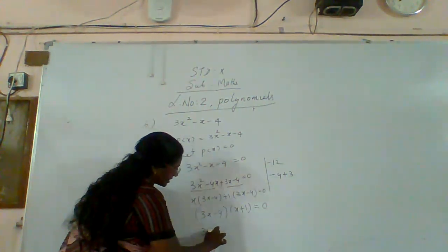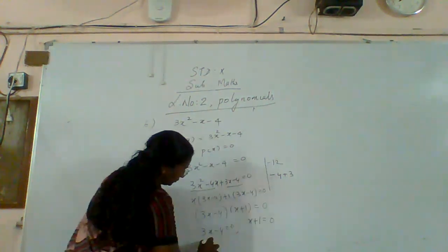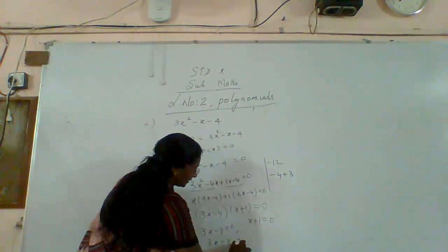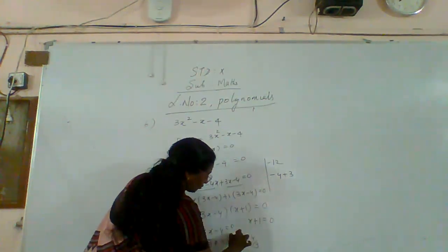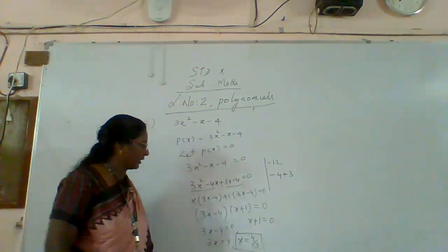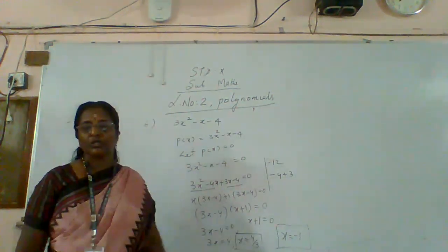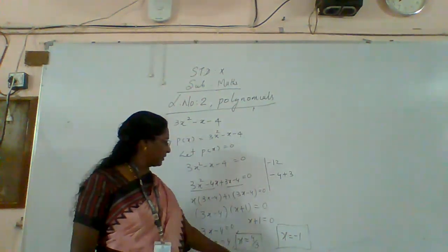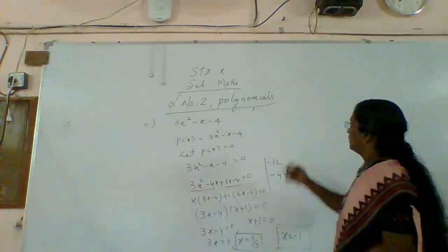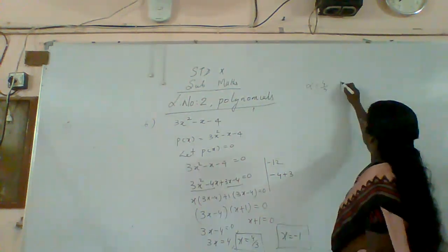Each factor: three x minus four equal to zero, so three x equals four, x equals four by three. And x plus one equal to zero, so x equals minus one. Therefore alpha equals four by three and beta equals minus one.